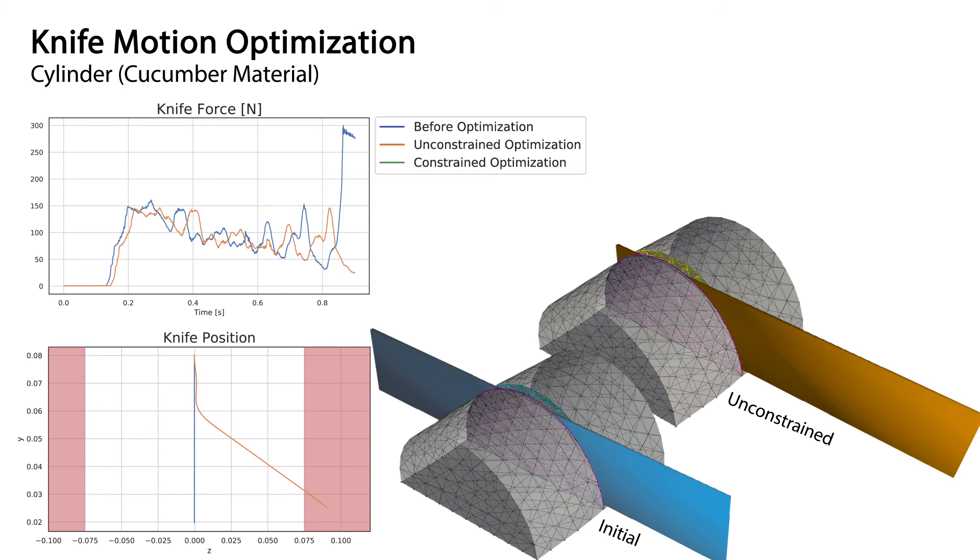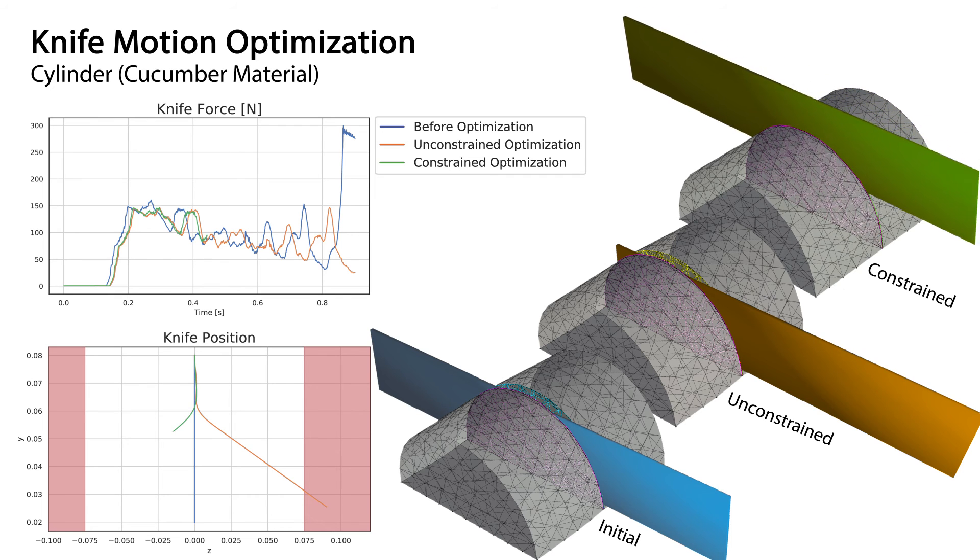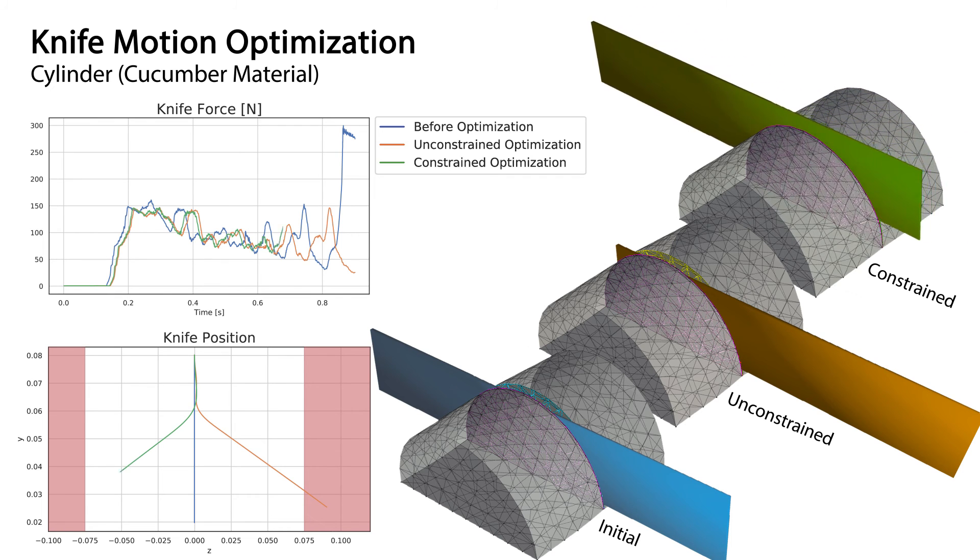Thanks to the end-to-end differentiability of DICECT, accurate gradients for such constraints are available and lead to a valid knife motion which requires only 0.3% more force than the unconstrained result.